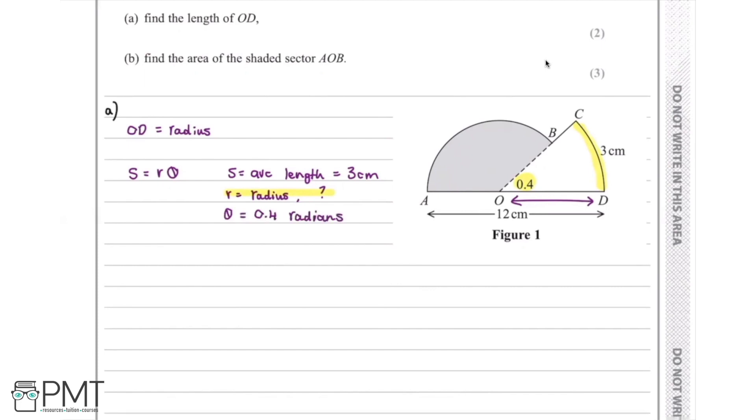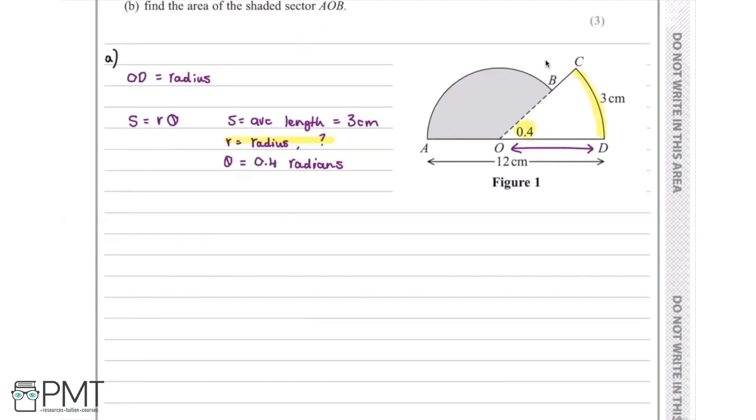Therefore, what we can do now is substitute these values into our equation, and that will give us 3 equals r times 0.4. Upon rearranging this, we have r equals 3 divided by 0.4, which equals 7.5 centimeters. Therefore, OD equals 7.5 centimeters.